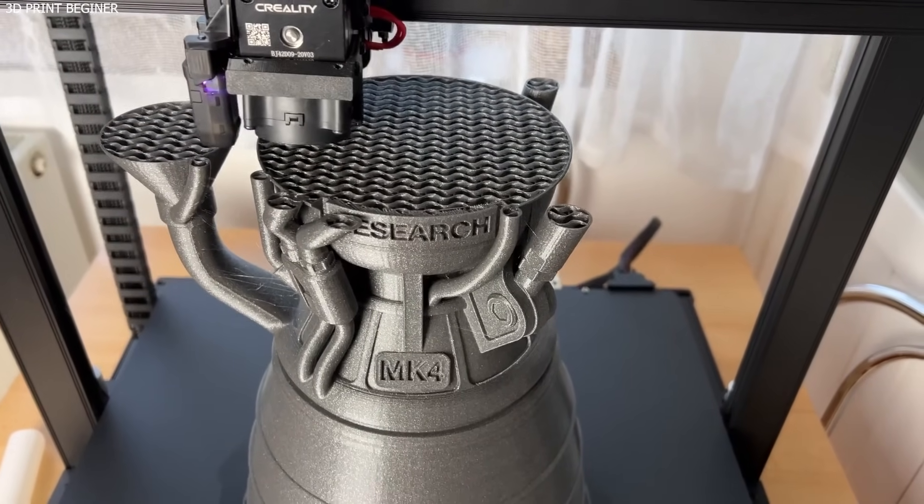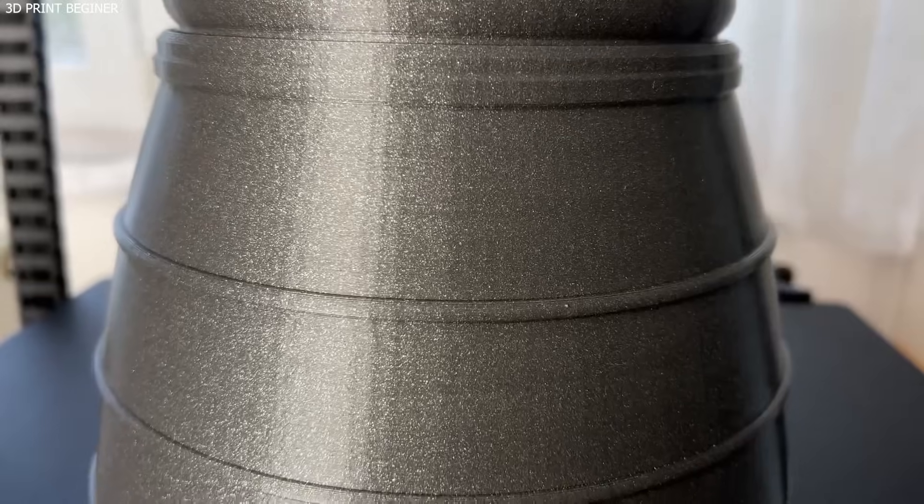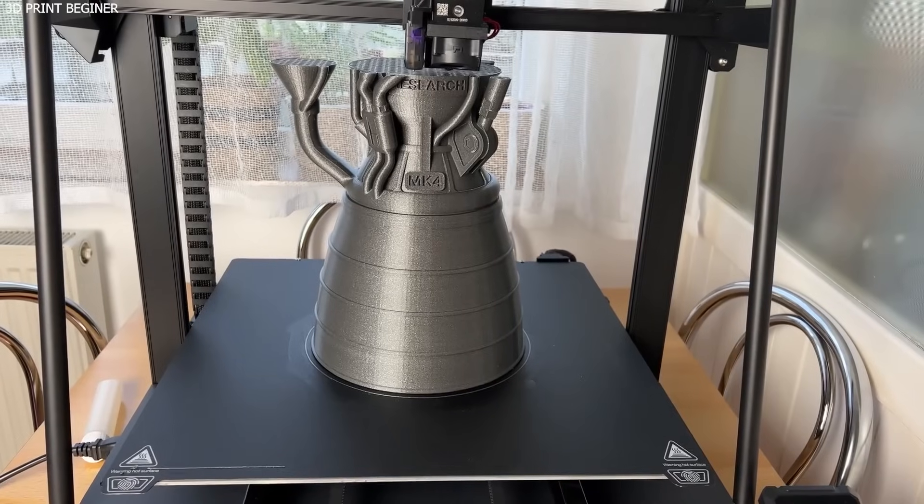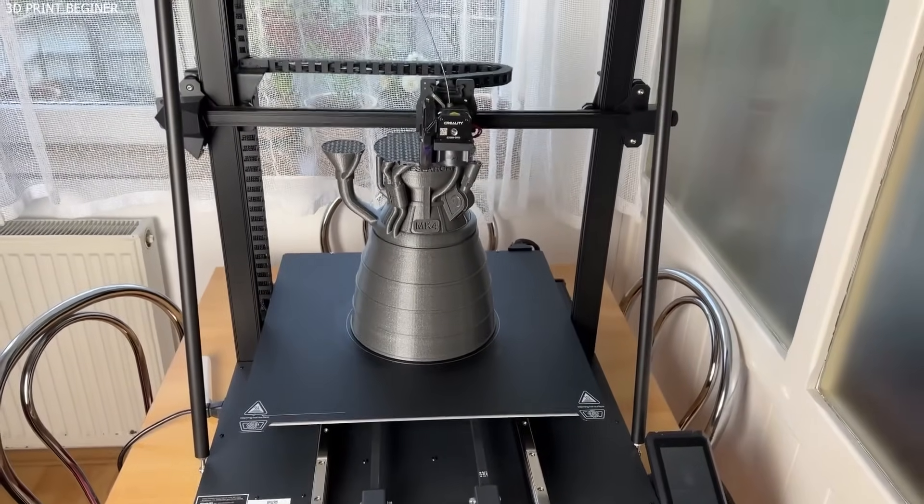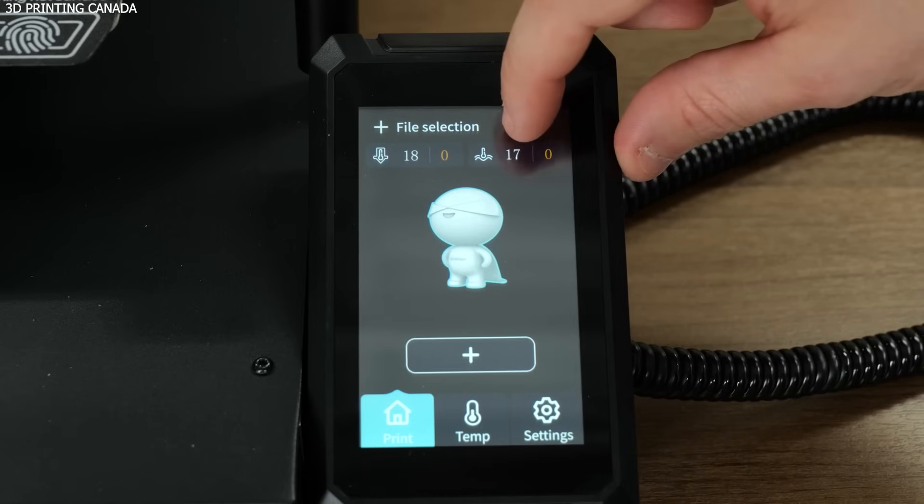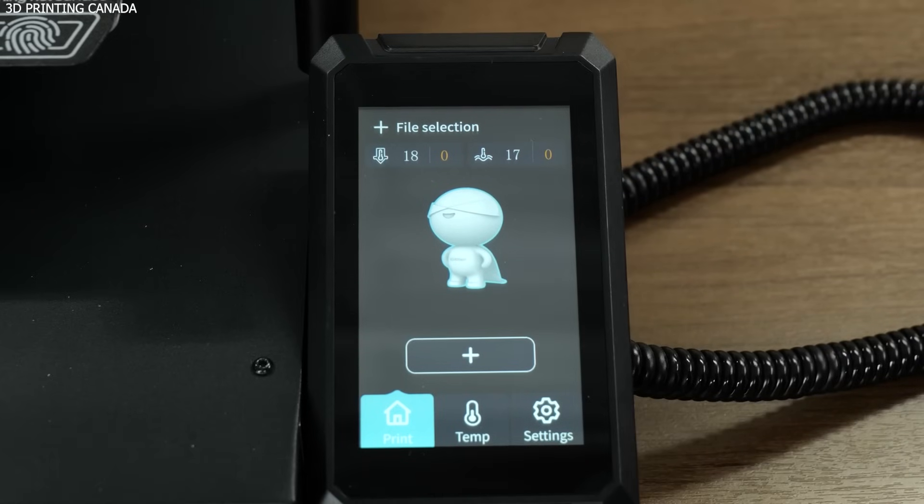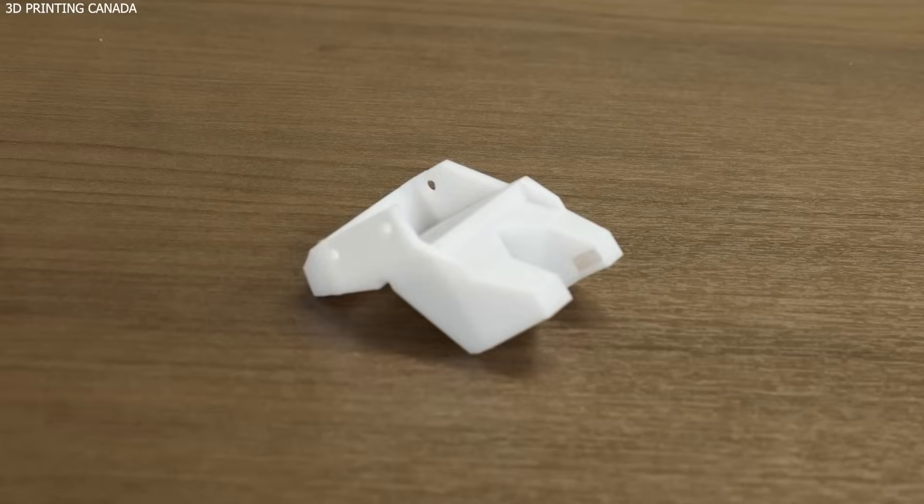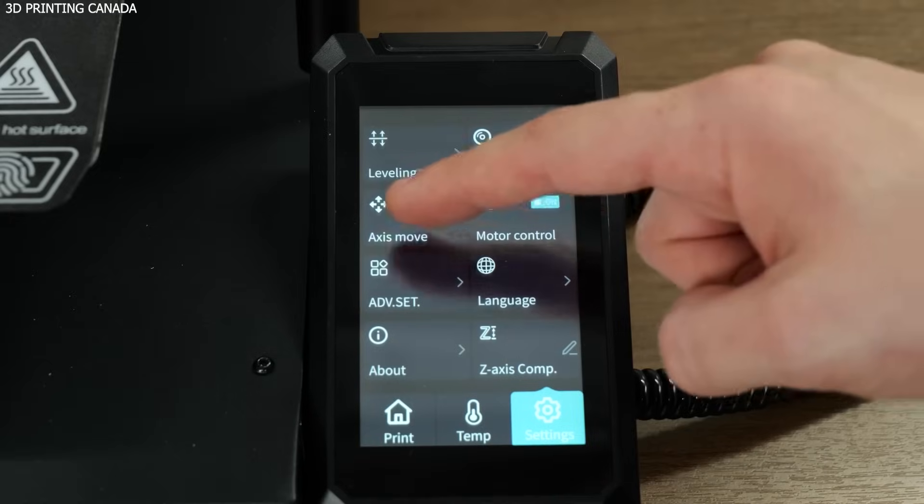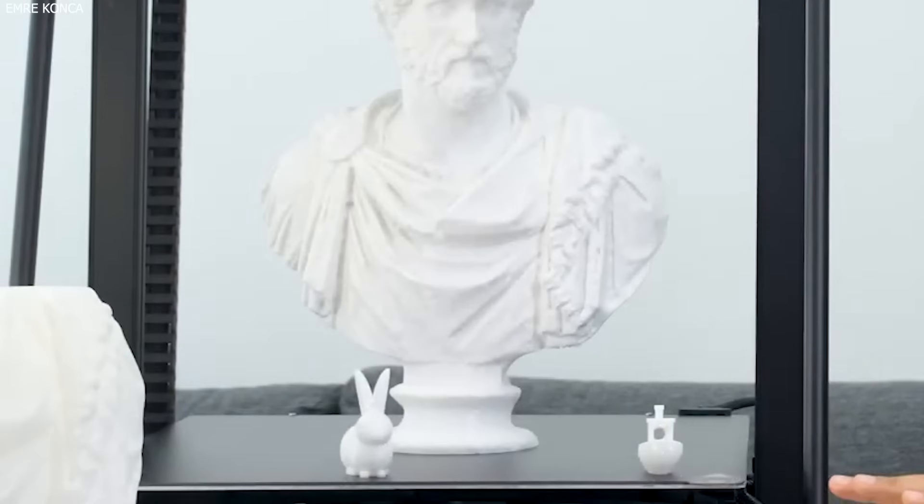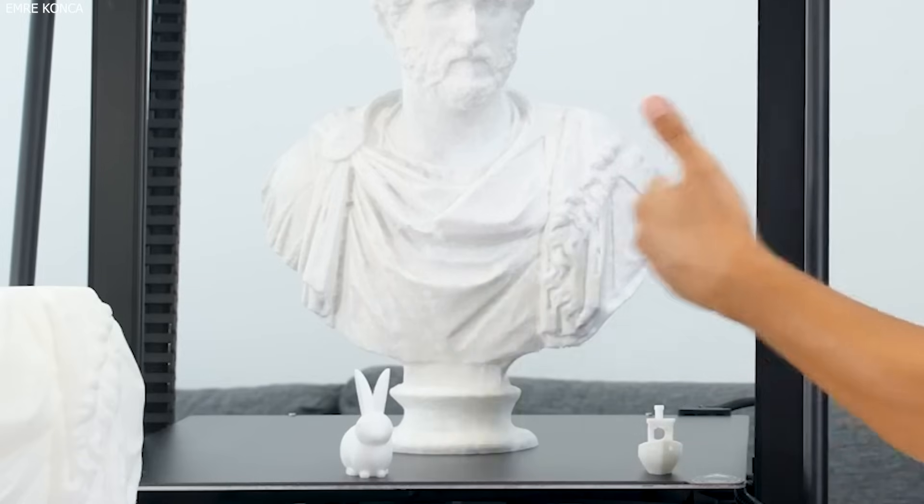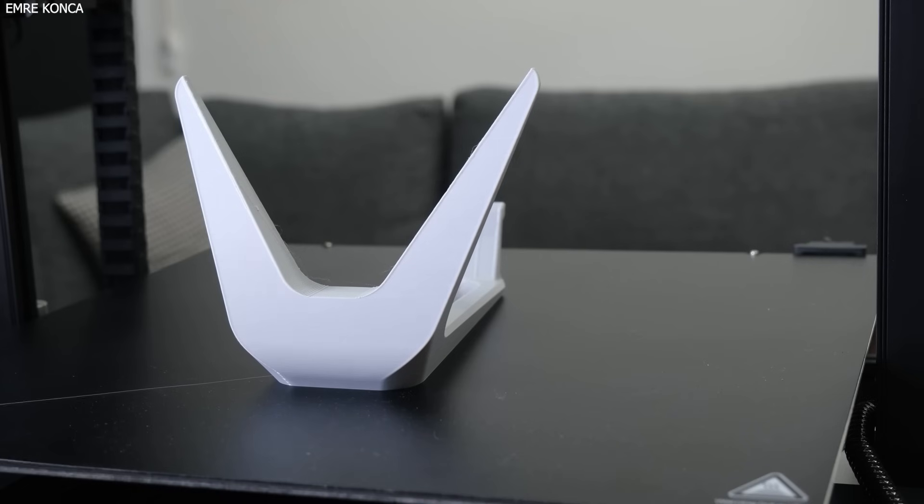The CRM4 is equipped with automatic bed leveling, ensuring consistent first-layer adhesion even on such a large build plate. The dual Z-axis system enhances stability, reducing wobbling and improving print accuracy, especially when working with taller models. Additionally, the high-speed direct drive extruder allows for smooth filament feeding, improving print quality when using materials like PLA, ABS, PETG, and TPU.